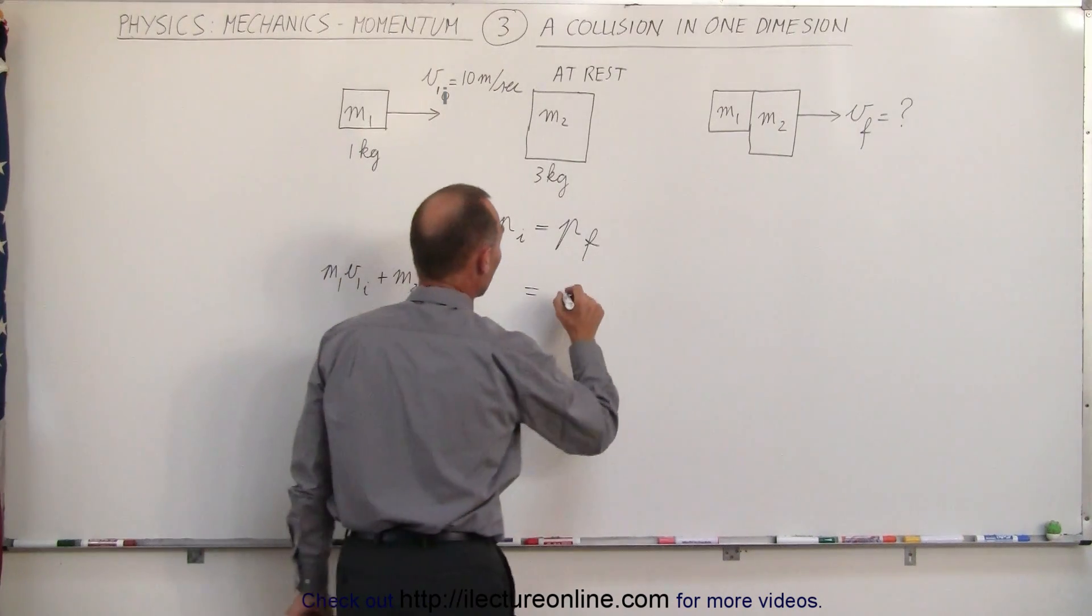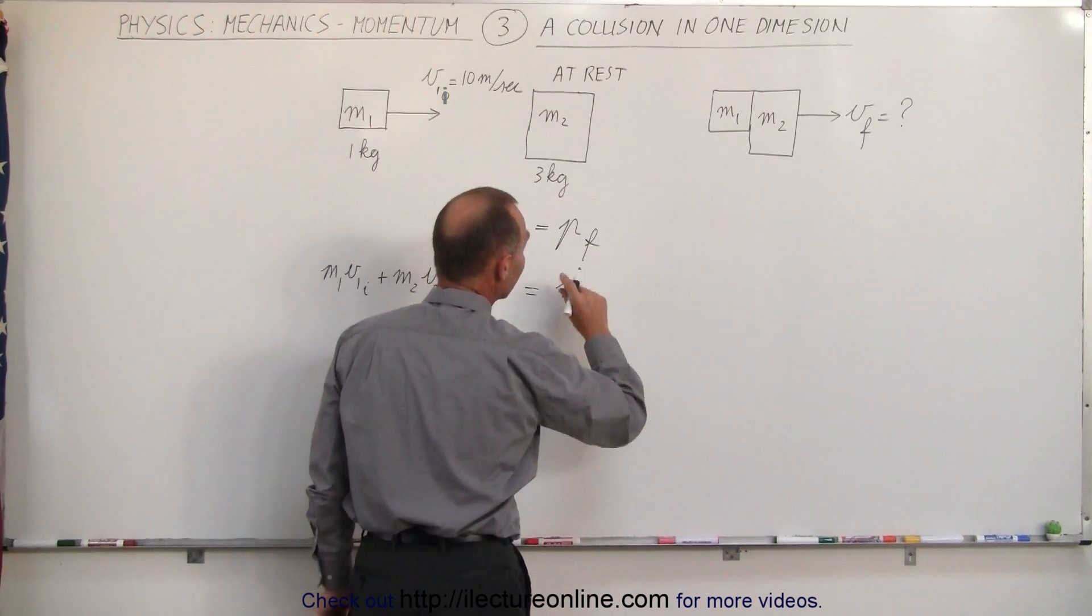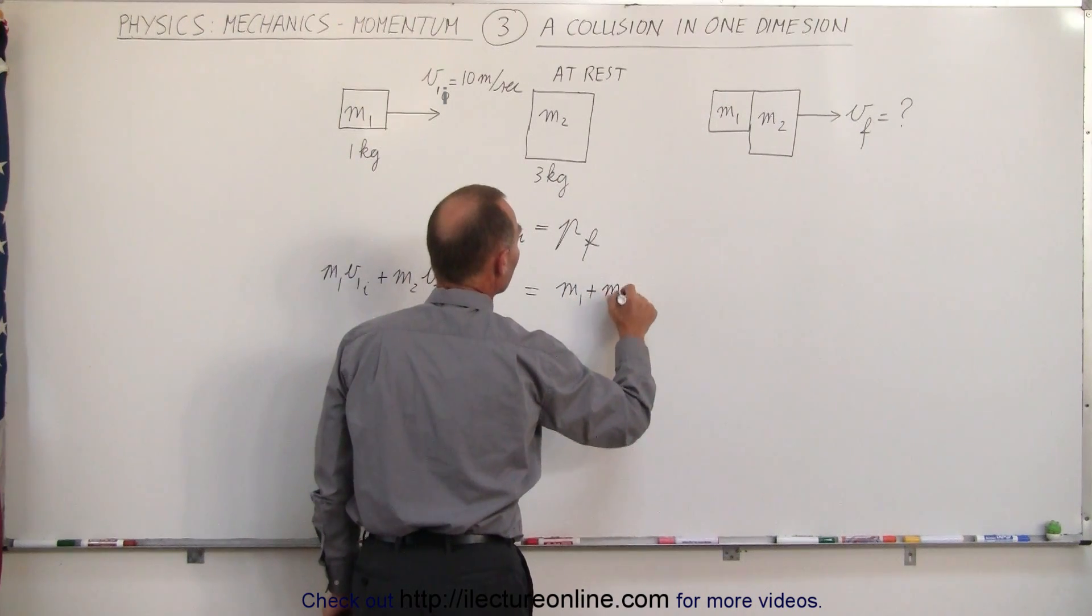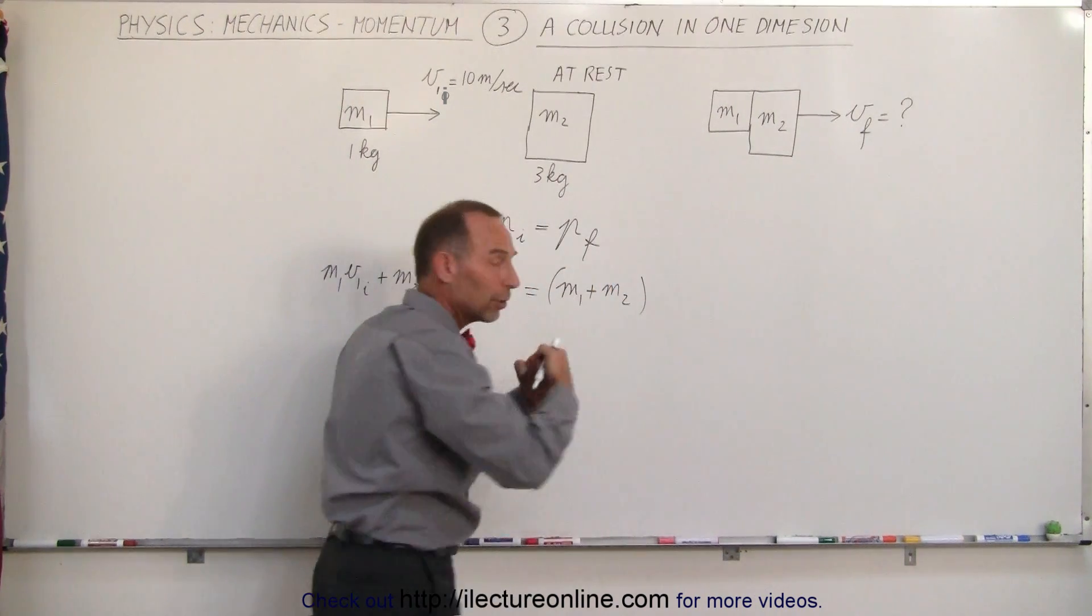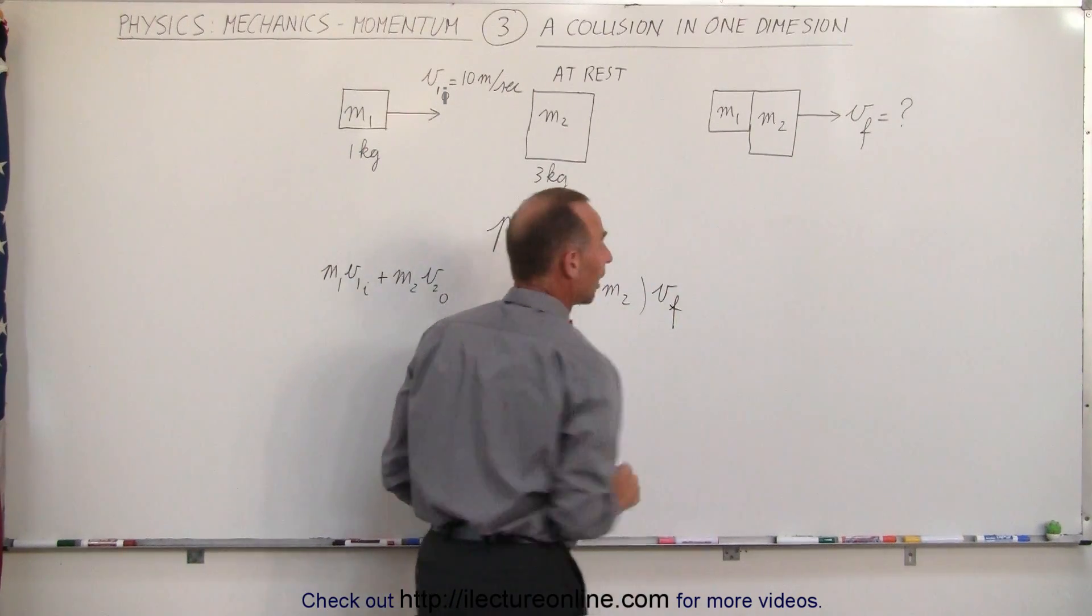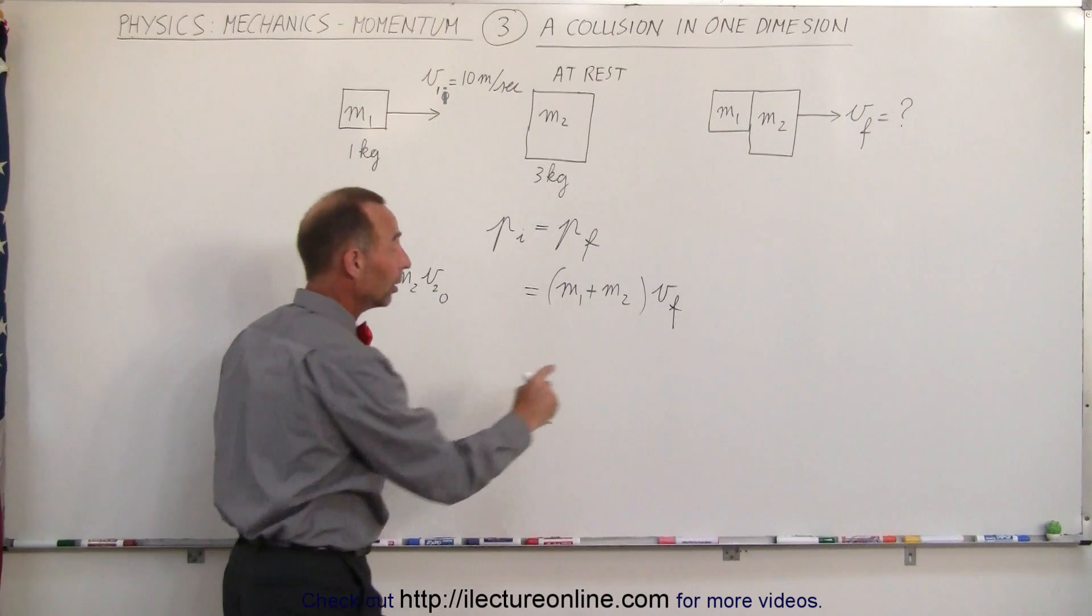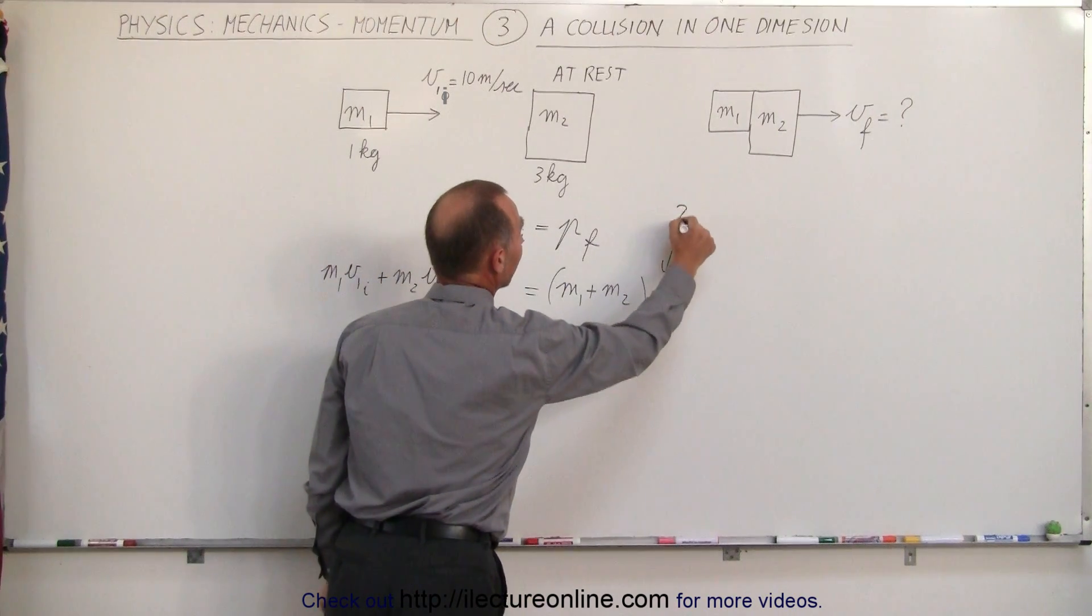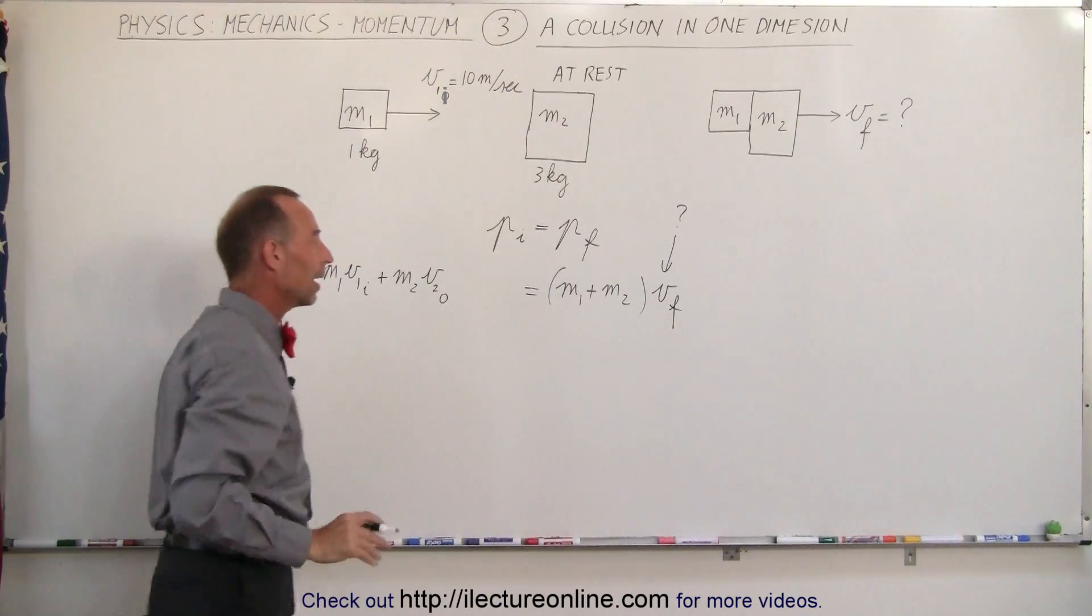And that must equal the momentum of the system after the collision. Since the two objects are now together, they stick together, we'll just take their total mass and multiply it times their combined final velocity. So that way, there's only one unknown here, the final velocity, that's what we're trying to find, and we know everything else about the problem.